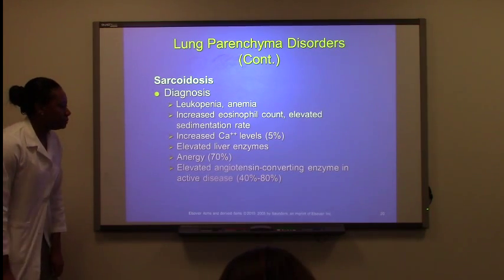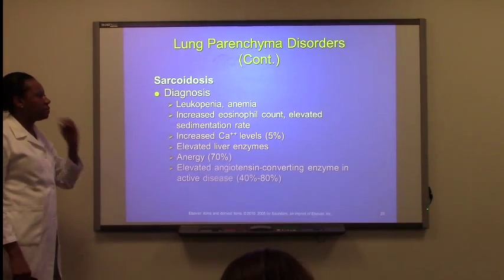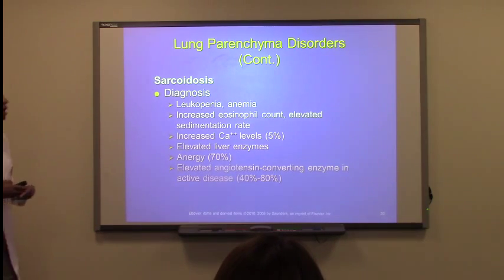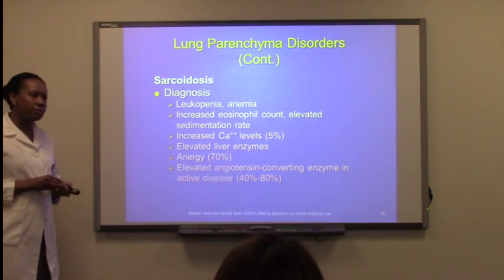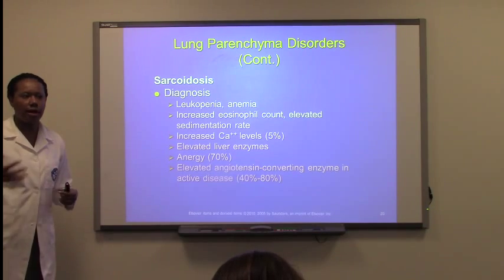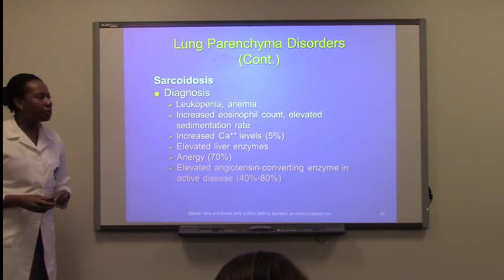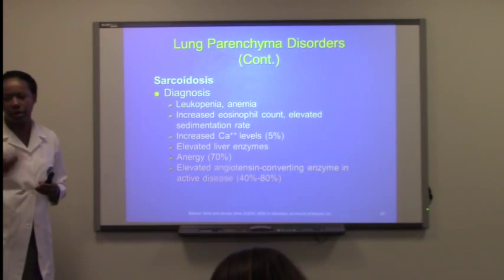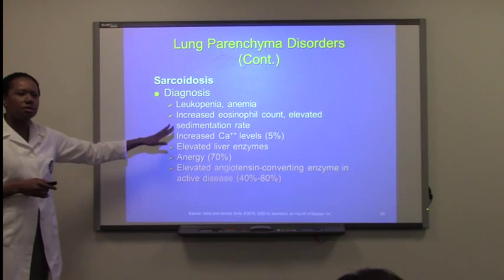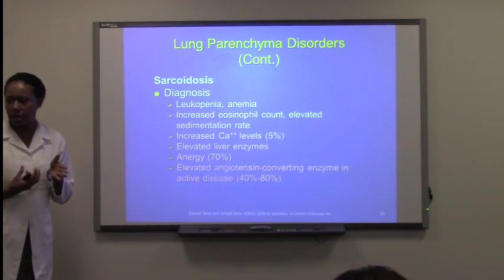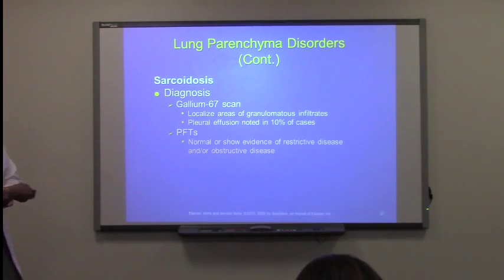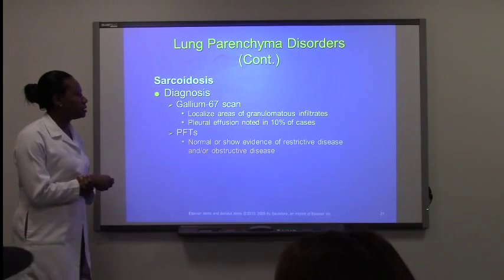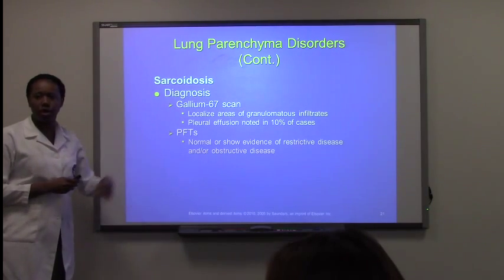Sarcoidosis diagnosis: leukopenia, anemia, elevated liver enzymes — because the granulomas attack the liver. Increasing calcium levels because it can affect bone, causing breakdown of bone and releasing calcium into the blood. These laboratory findings reflect destruction happening to the actual organs involved. Gallium-67 scan will detect diseased tissues and show the areas of those granulomas.